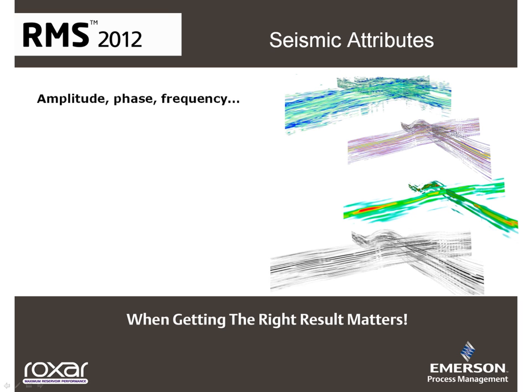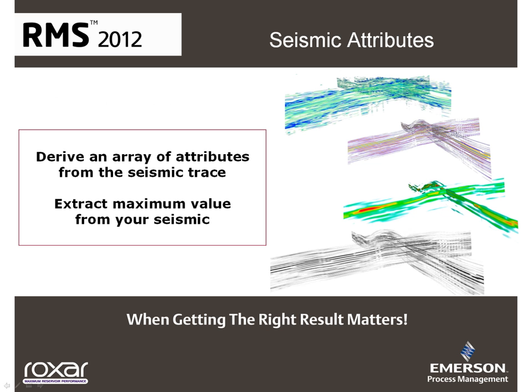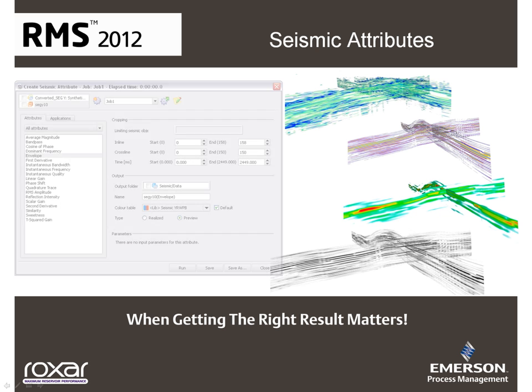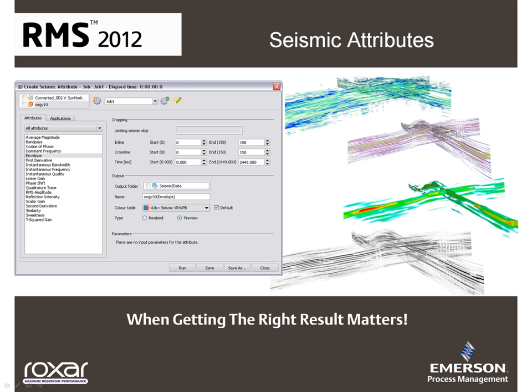Amplitude, phase and frequency are fundamental to the seismic trace and resulting cube. These can be used to derive an array of seismic attributes, therefore extracting maximum value from your seismic. With RMS 2012, you get a solid suite of attributes to help build better models.